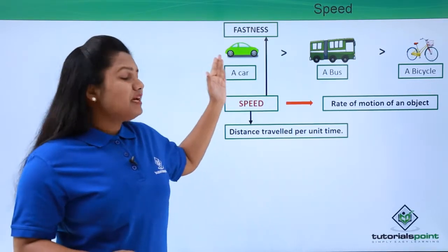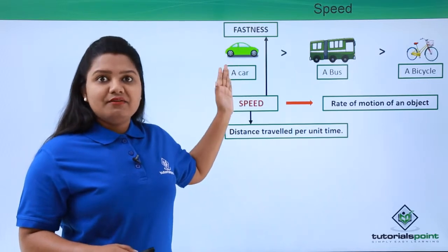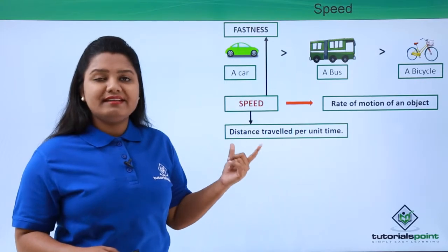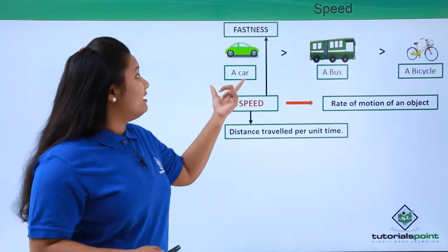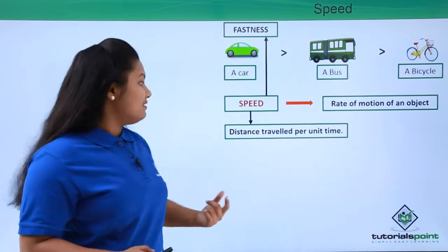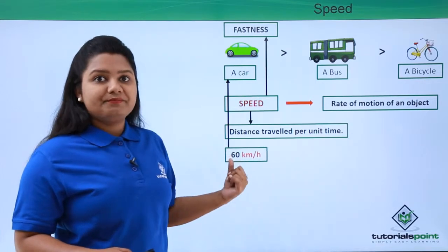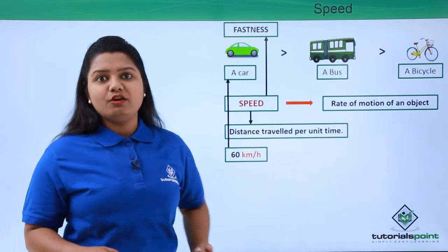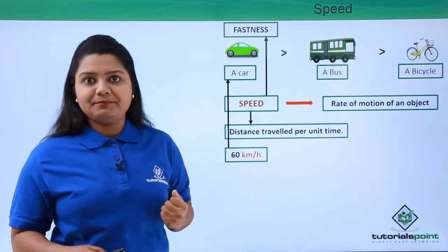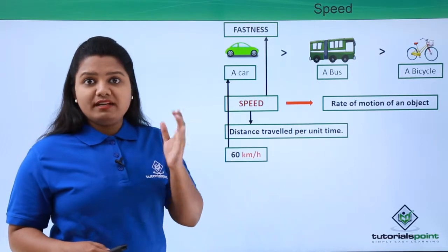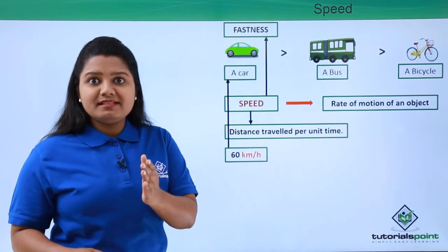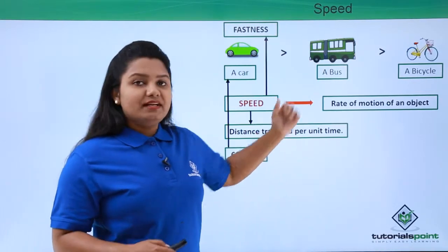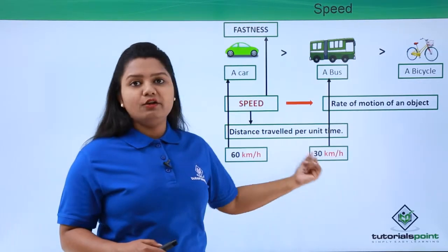As we have seen, a car travels 60 km in just one hour, and one hour here is a unit time. So we can say that the speed of this car is 60 km per hour. The bus covered the same 60 km but took two hours, so at the end of one hour it must have covered half the distance — 30 km — and thus the speed of this bus is 30 km per hour.